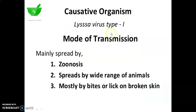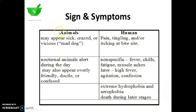The positive organism for Rabies is Lyssa virus type 1. Mode of transmission is mainly spread by zoonosis — spreads by a wide range of animals, mostly by bites or lick on broken skin. Signs and symptoms in case of animals: they may appear sick, crazed or vicious, that is mad dog. In case of humans: pain, tingling and/or itching at the bite site.